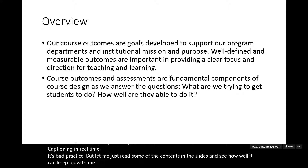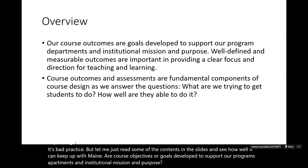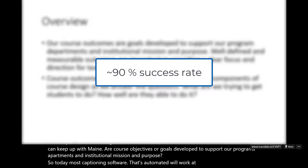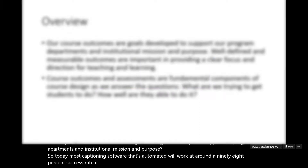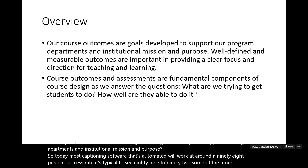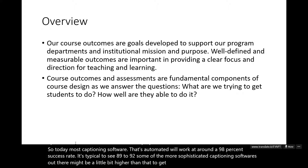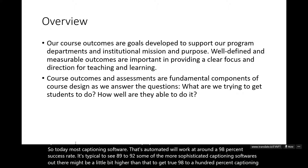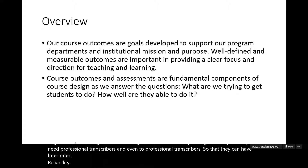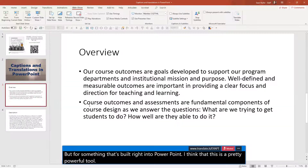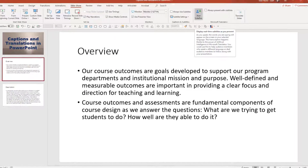It's bad practice, but let me just read some of the content on the slides to see how well it keeps up: 'Our course objectives — their goals developed to support our program departments and institutional mission and purpose.' Today, most automated captioning software works at around a 90% success rate — typically 89 to 92%. More sophisticated captioning software might be slightly higher. To get true 98 to 100% accuracy you really need professional transcribers, ideally two, for inter-rater reliability. But for something built right into PowerPoint, this is a pretty powerful tool.